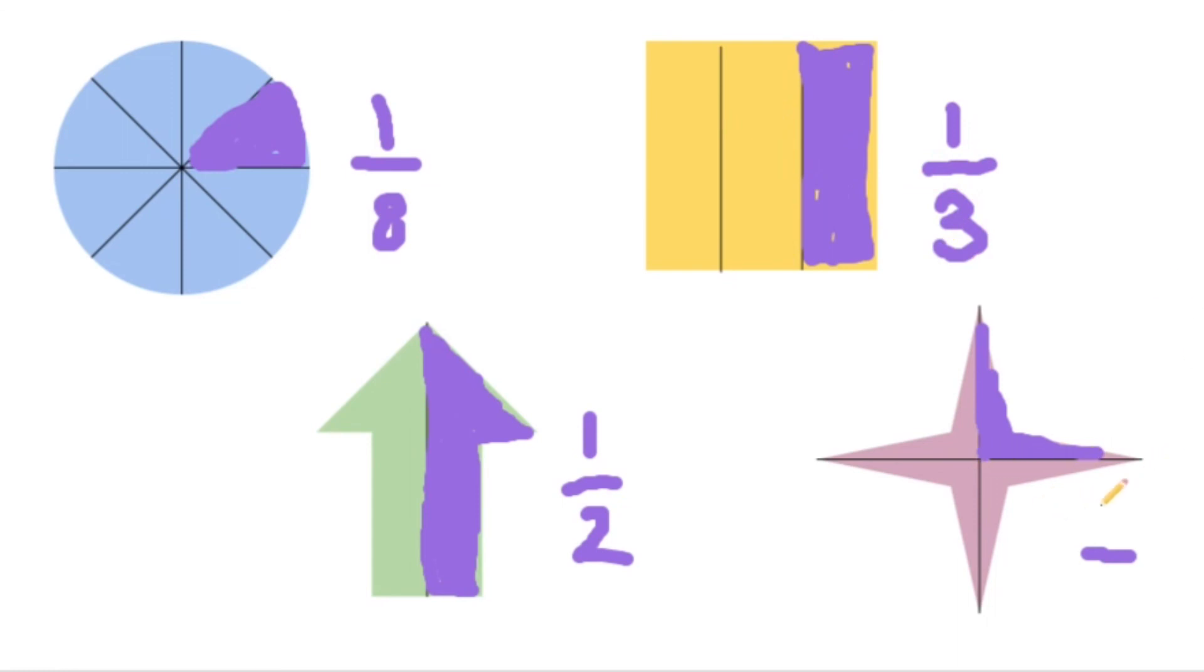And here there's one piece colored out of one, two, three, four pieces. One fourth or one quarter is colored. That's your work today. Enjoy your math.